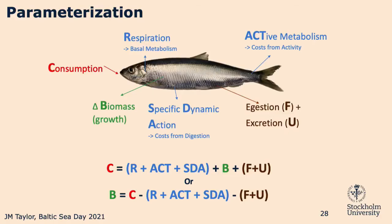What's really cool about bioenergetics models is you can rearrange them. If you know three of these terms, you can figure out the rest. A common application is: if we know consumption, the respiration of the fish, and how much waste they excrete, we can model growth — and vice versa. We can also model how much nitrogen or phosphorus they release in their waste, which has a lot of impacts when investigating ecosystem-level functions.